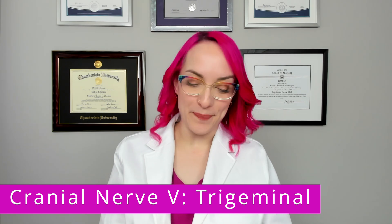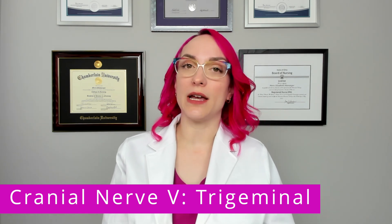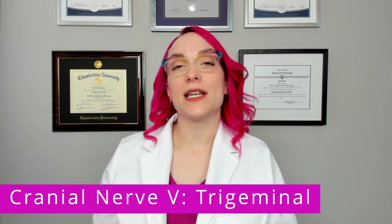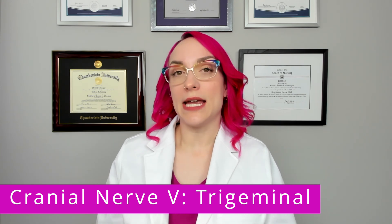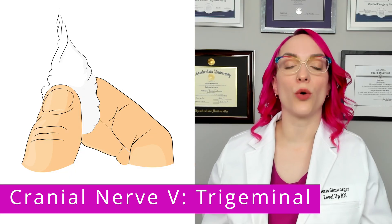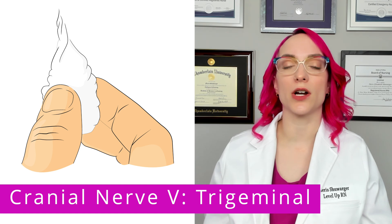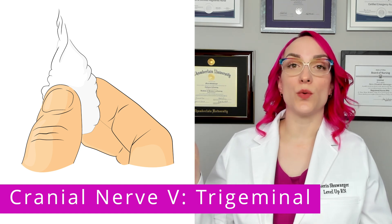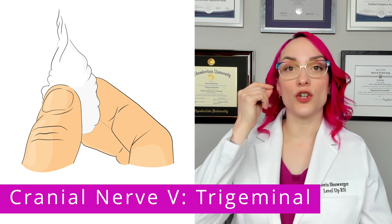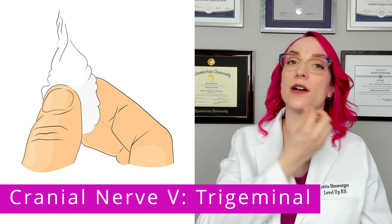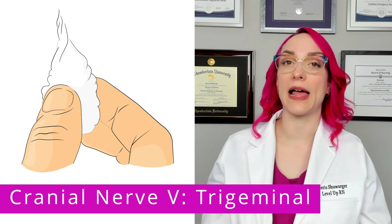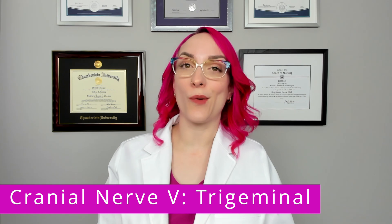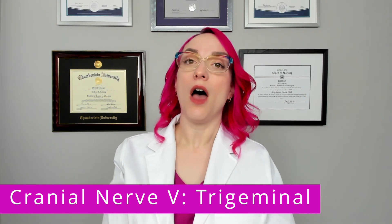For the sensory component, the best way to assess it is to have the patient close their eyes, then take something like a cotton ball or a cotton wisp, and lightly touch it to the patient's face in several different areas, asking them to identify where they are feeling the sensation of light touch. That's how we assess the sensory component of cranial nerve five.